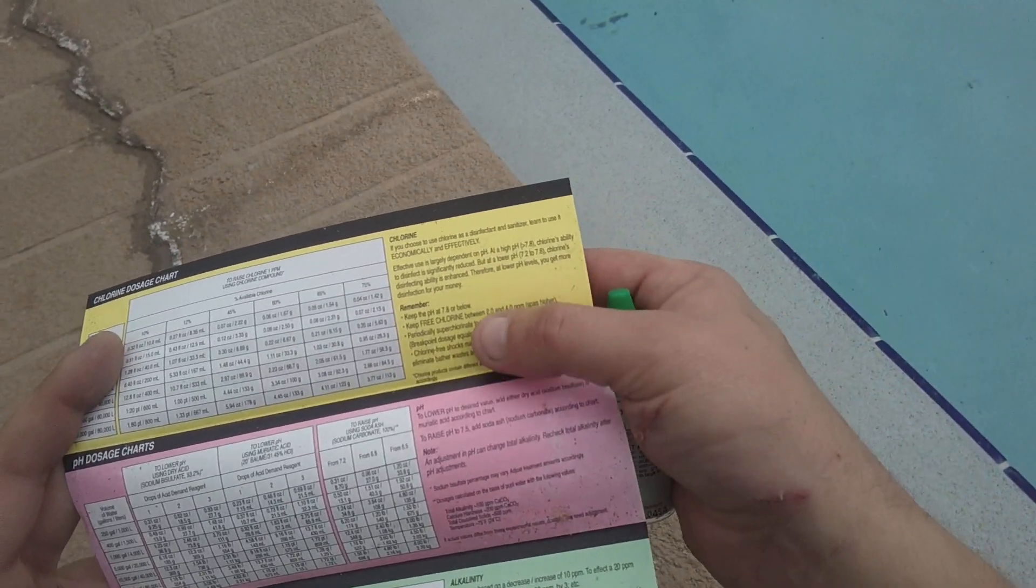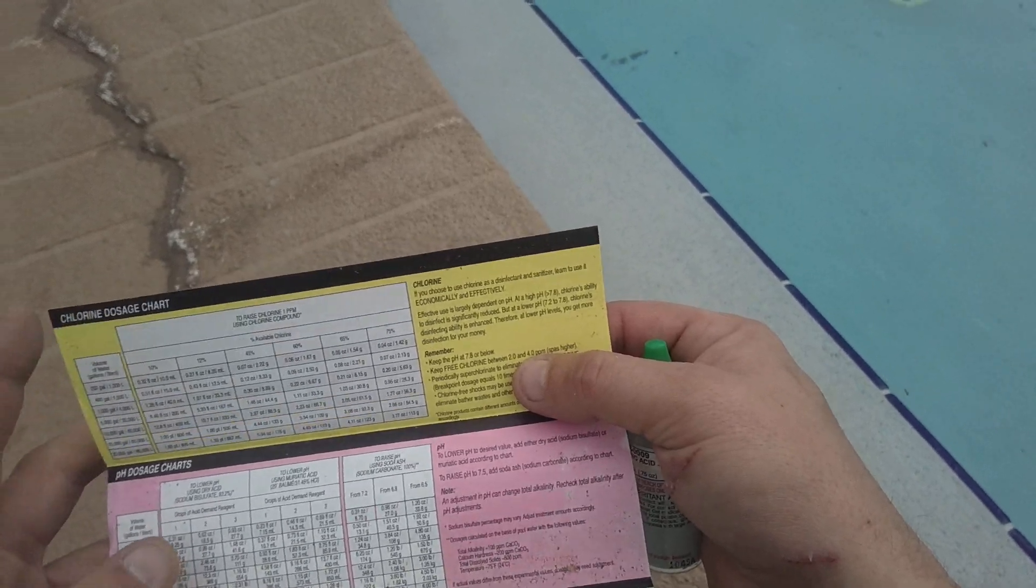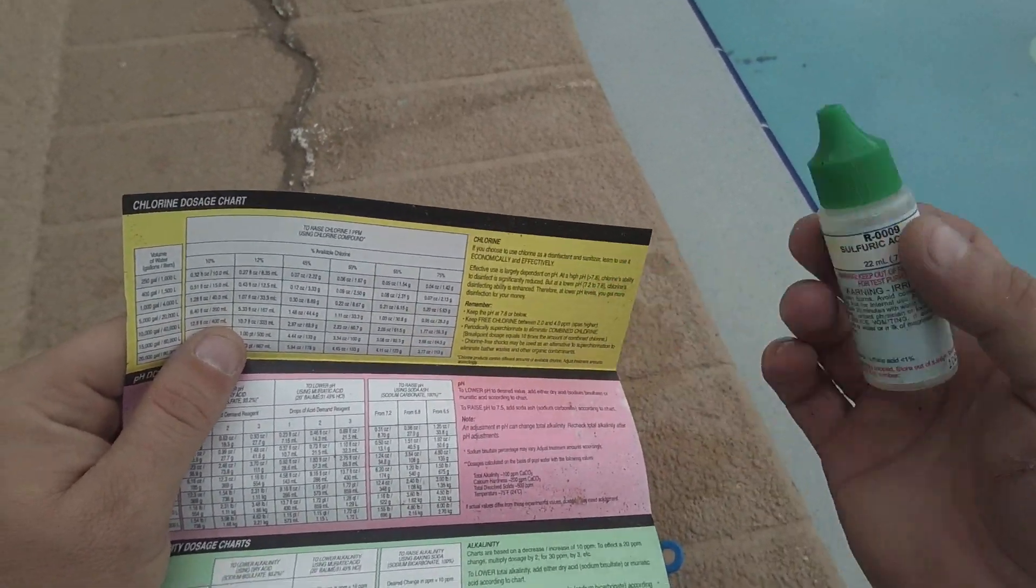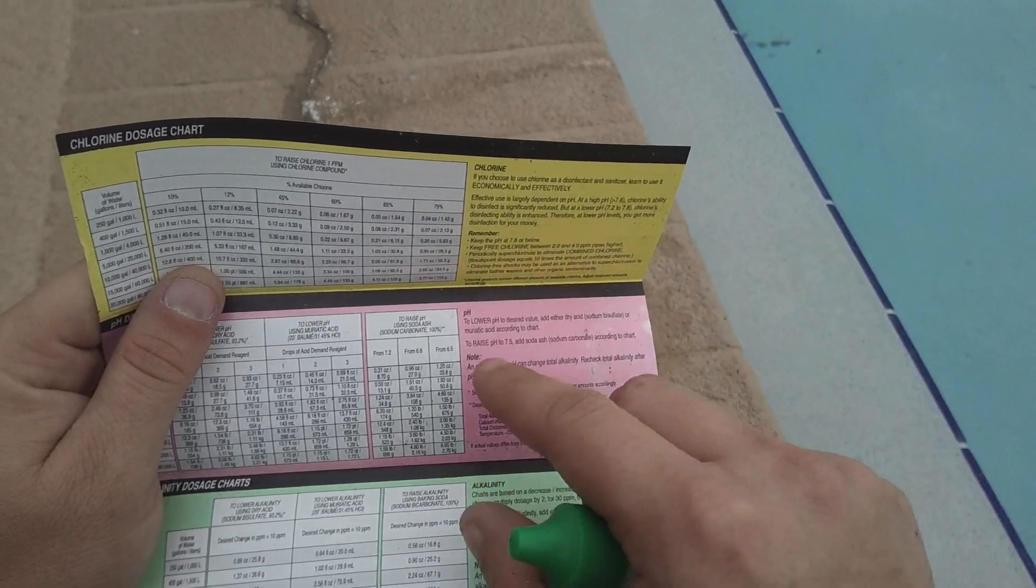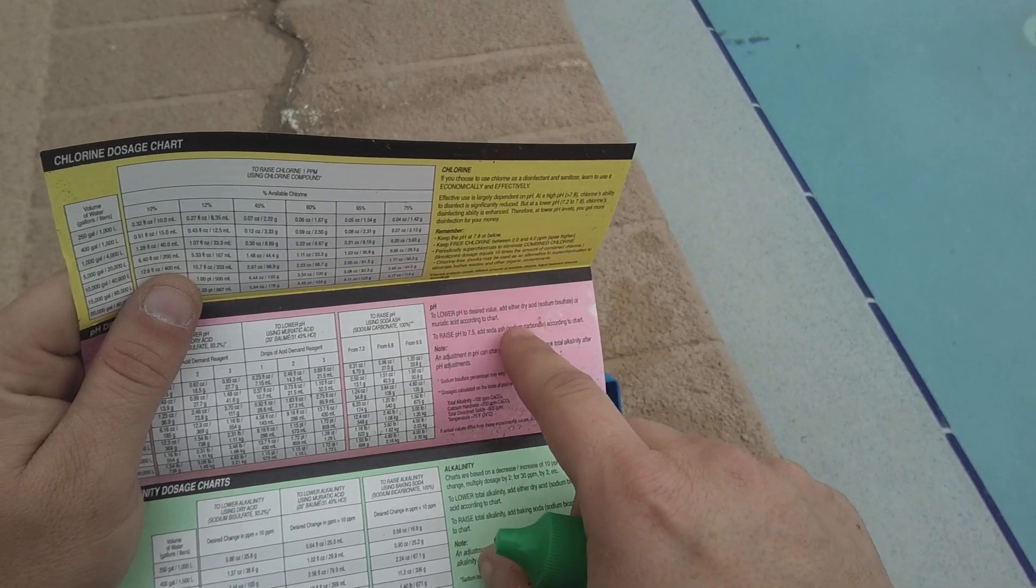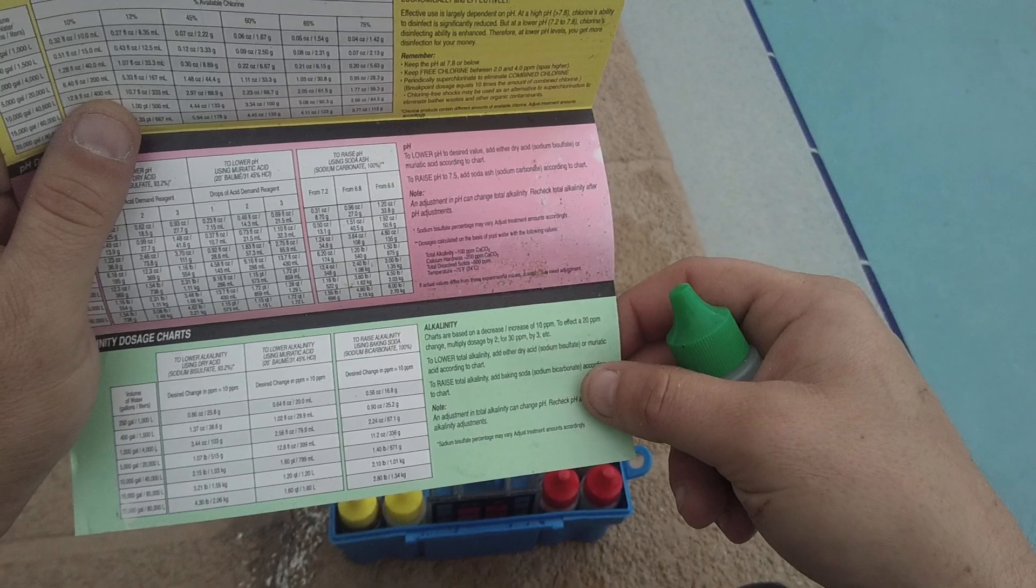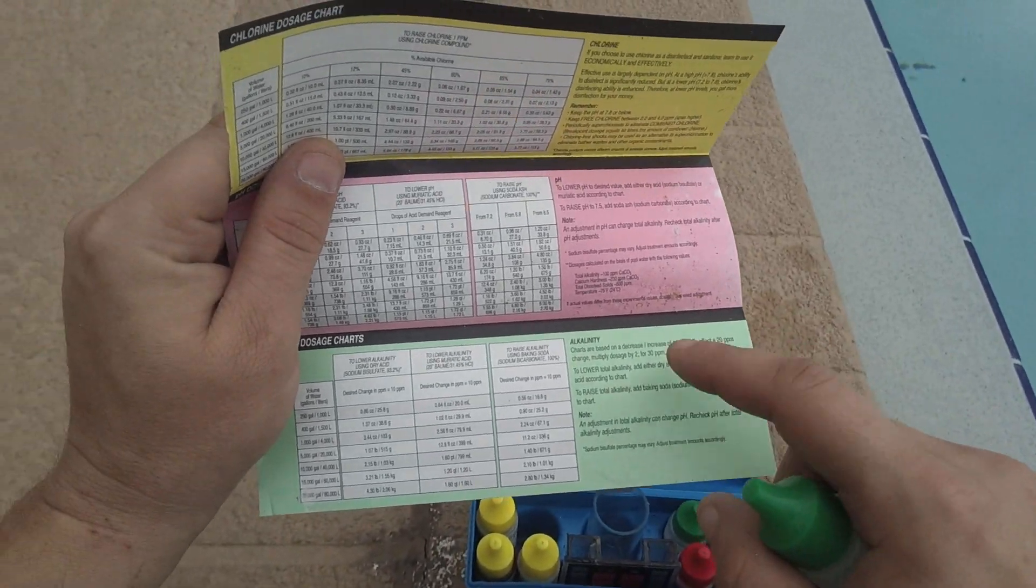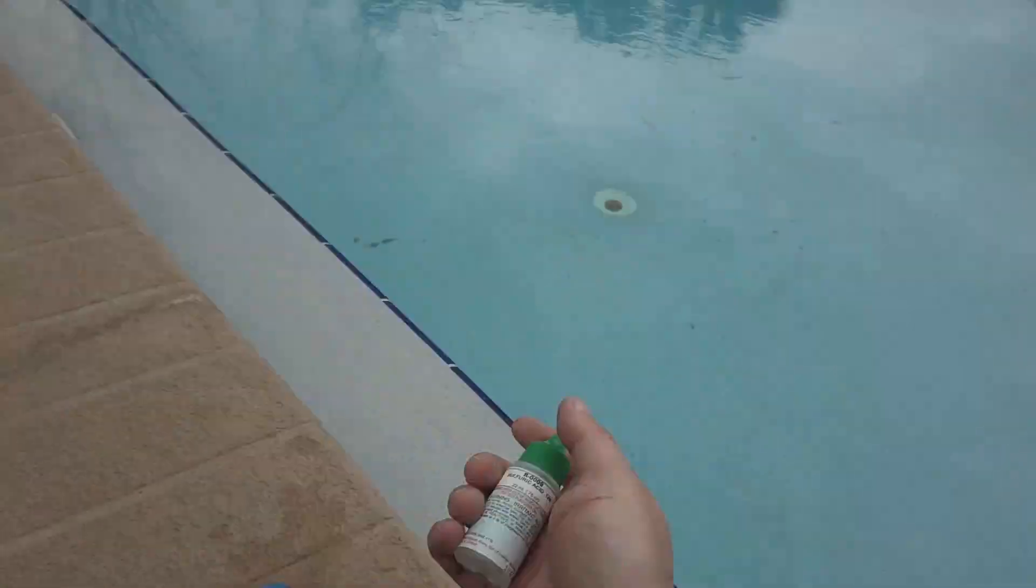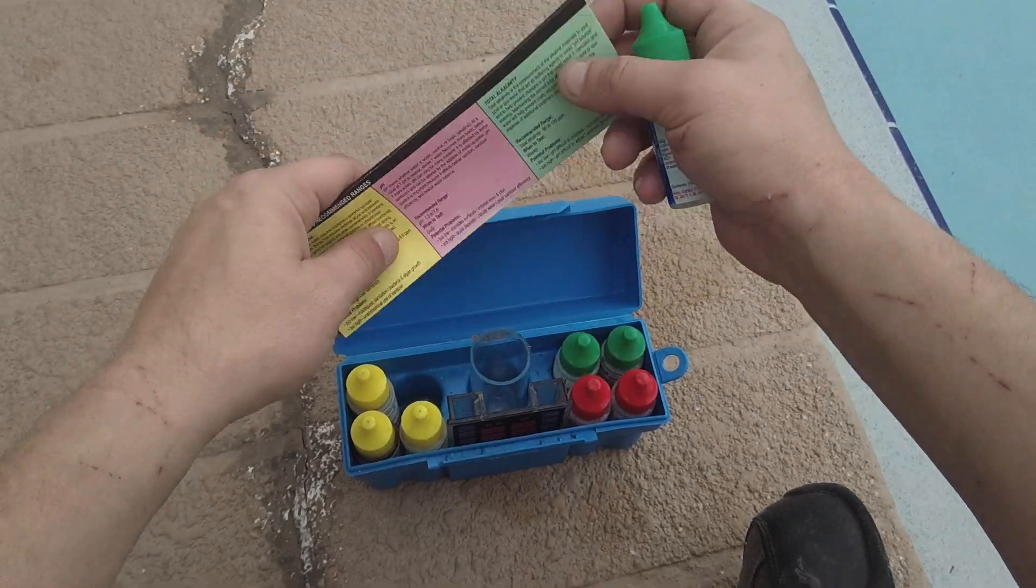You want to keep free chlorine between 2 and 4 parts per million, so we're right there. We're keeping it a little high right now because it's probably still got some pool shock in it. You want to have 7.2 to 7.4 for your pH, and then alkalinity is 80 to 180 or something like that, but as long as you're between 80 and 100, your pool will be fine for alkalinity.